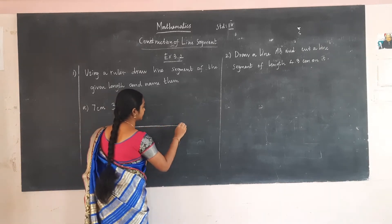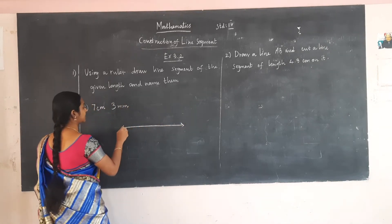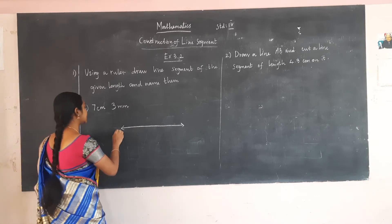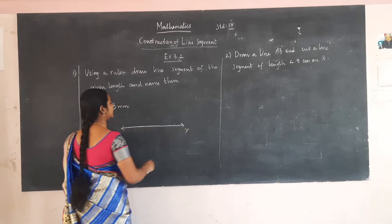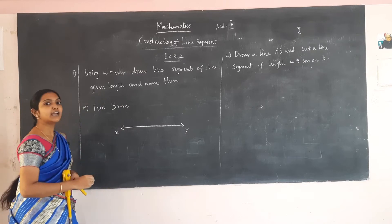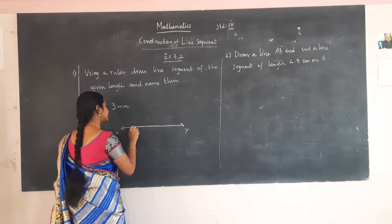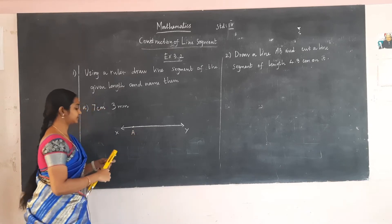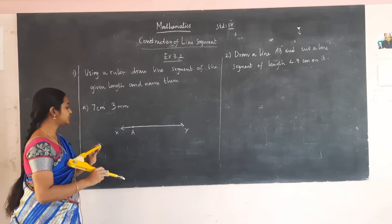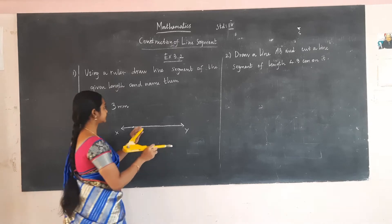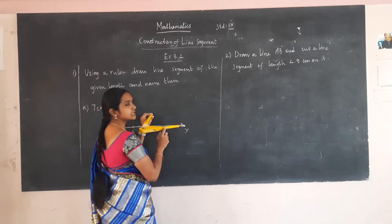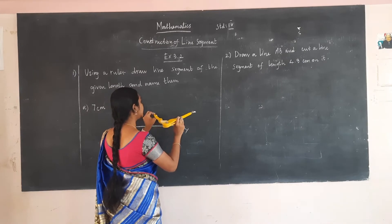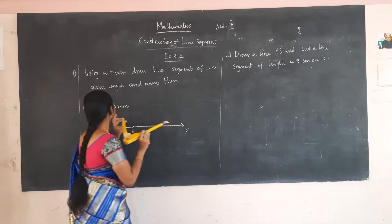First, we have to draw a line. Let us name it XY. Now we have to fix a point on it. Let this point be A. I am going to keep the sharp point upon 0 cm on the scale and move towards the right until we reach 7 cm 3 mm.